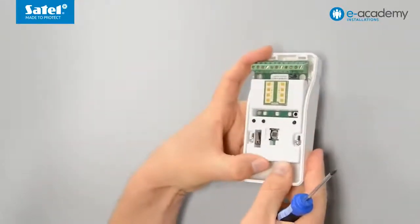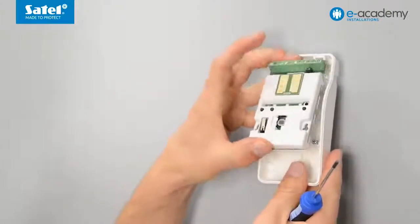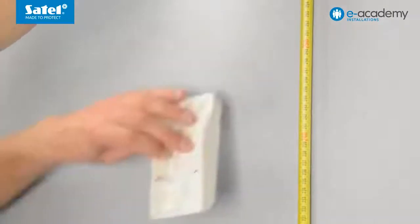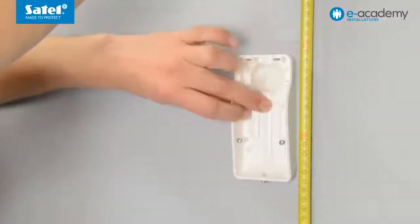Next, prepare the mounting points on the wall. Begin by determining at what height the detector is to be installed. The recommended height is 2.4 meters.